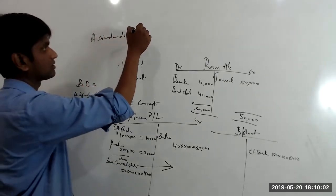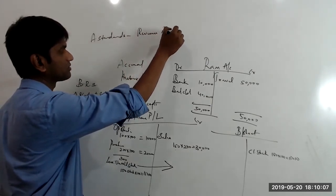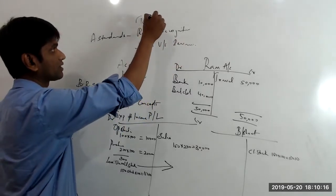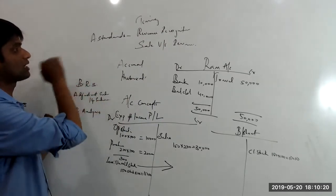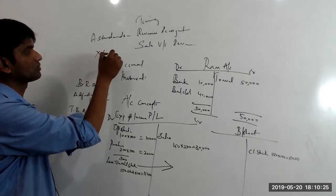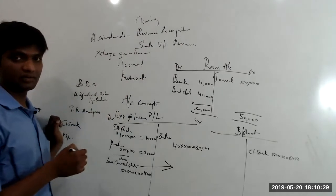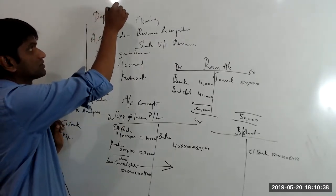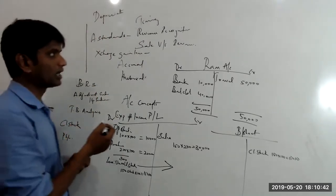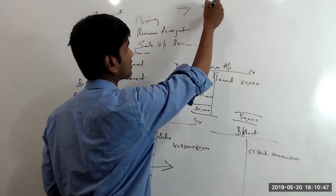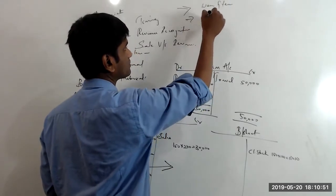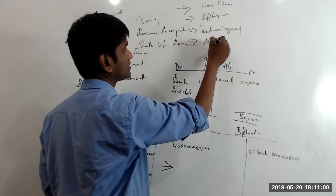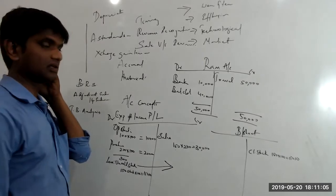We'll take up important aspects like revenue recognition — the difference between a sale and revenue, and the timing of revenue. We'll also cover how to record exchange gain or loss and what the accounting standard says about it. Then there's depreciation — four ways to depreciate an asset: the normal method (straight-line), passage of time, technological obsolescence, and market changes.